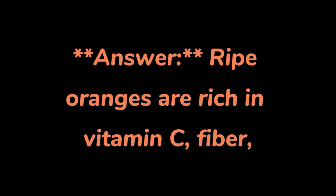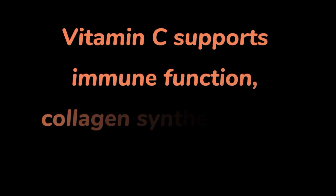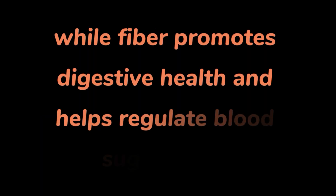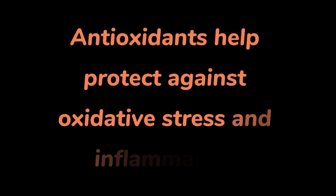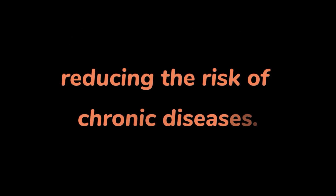Question 3: Discuss the nutritional composition of the ripe orange fruit and its health benefits. Answer. Ripe oranges are rich in vitamin C, fiber, and various antioxidants such as flavonoids and carotenoids. Vitamin C supports immune function, collagen synthesis, and iron absorption, while fiber promotes digestive health and helps regulate blood sugar levels. Antioxidants help protect against oxidative stress and inflammation, reducing the risk of chronic diseases.